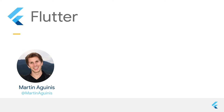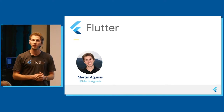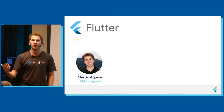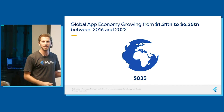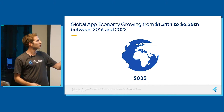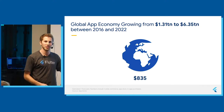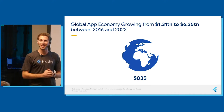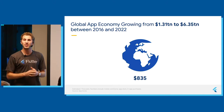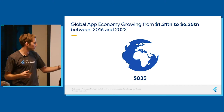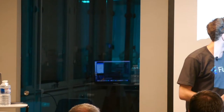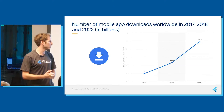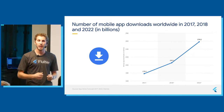First I wanted to start with the general mobile landscape. Something really interesting is that from 2016 to 2022, the global app economy is going to grow from $1.31 trillion to $6.35 trillion. It's hard to conceptualize numbers like this — to give you an idea, $1.35 trillion is like saying every human being on the planet has to contribute $835. Part of the reason for this is that the actual number of apps being downloaded is growing as well. Here in 2018 we're at about $205 billion annually, and by 2022 the growth continues.